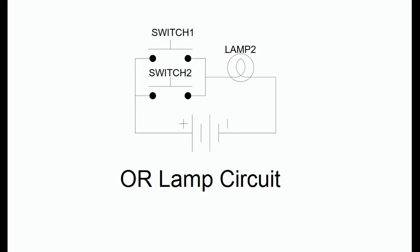That is, depressing either of the switches will cause the lamp, lamp 2, to illuminate. The boolean expression for this circuit is lamp 1 equals switch 1 plus switch 2.